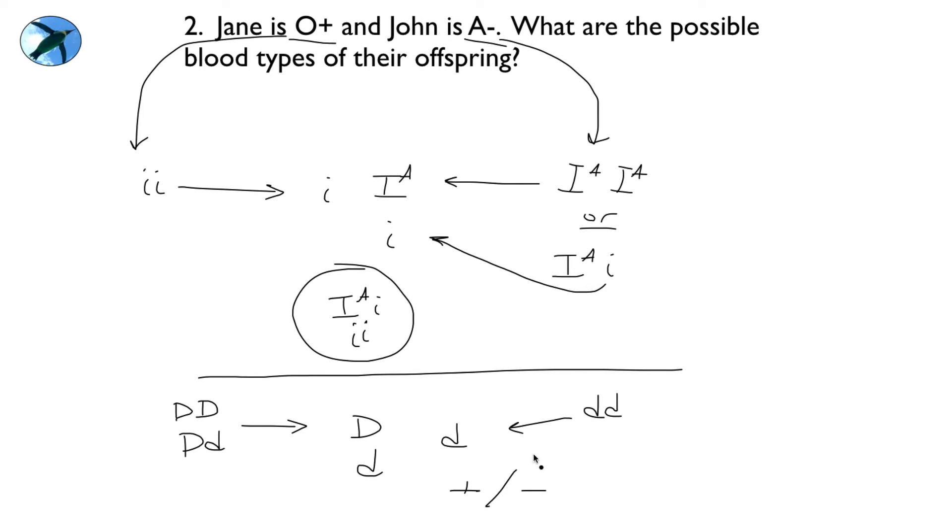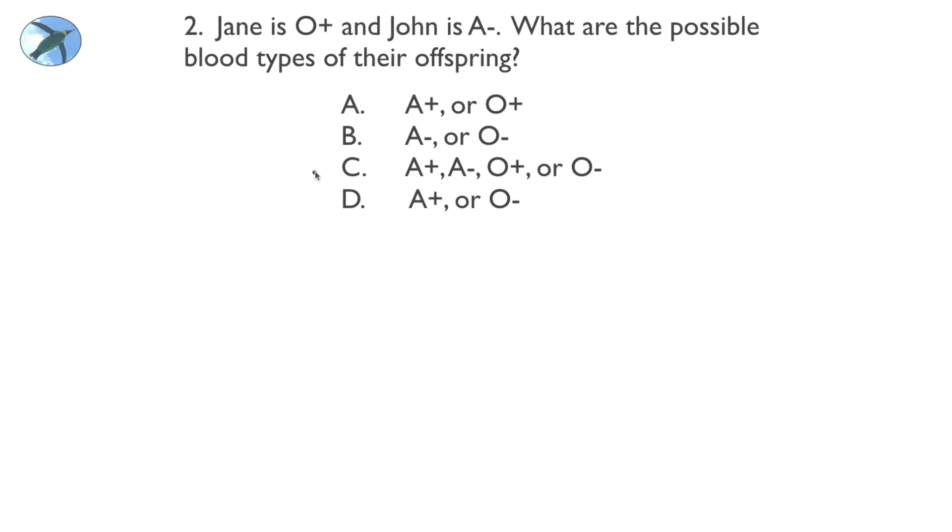So that gives you, out of all the options, offspring that are A or O, and those A or O children could be either positive or negative. So now we go back to the multiple choice questions, and now hopefully you see it's not so bad, because this one, letter C, that gives us all the possible options they could make, either A or O, and those offspring either Rh positive or Rh negative. So the answer is C.